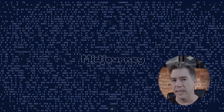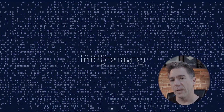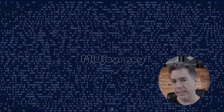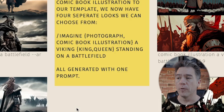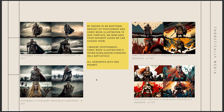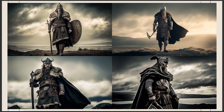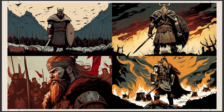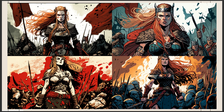Keeping with our Viking king and queen, we're going to add a permutation prompt of 'photograph' and 'comic book illustration' to the front. So it would be: imagine {photograph, comic book illustration} a Viking {king, queen} standing on a battlefield. Now we've generated four different looks — photograph king, photograph queen, comic book illustration king, and comic book illustration queen — all from one prompt.